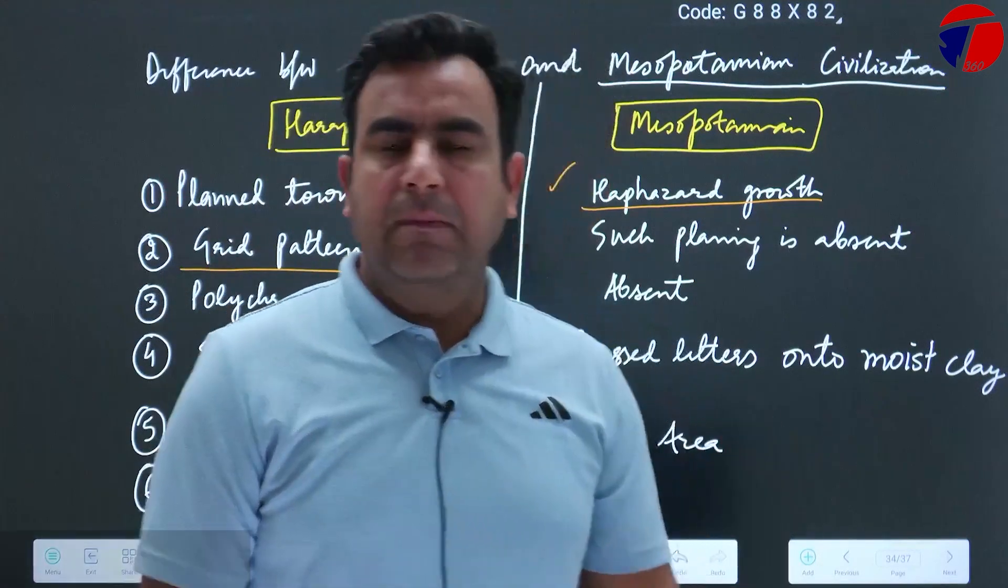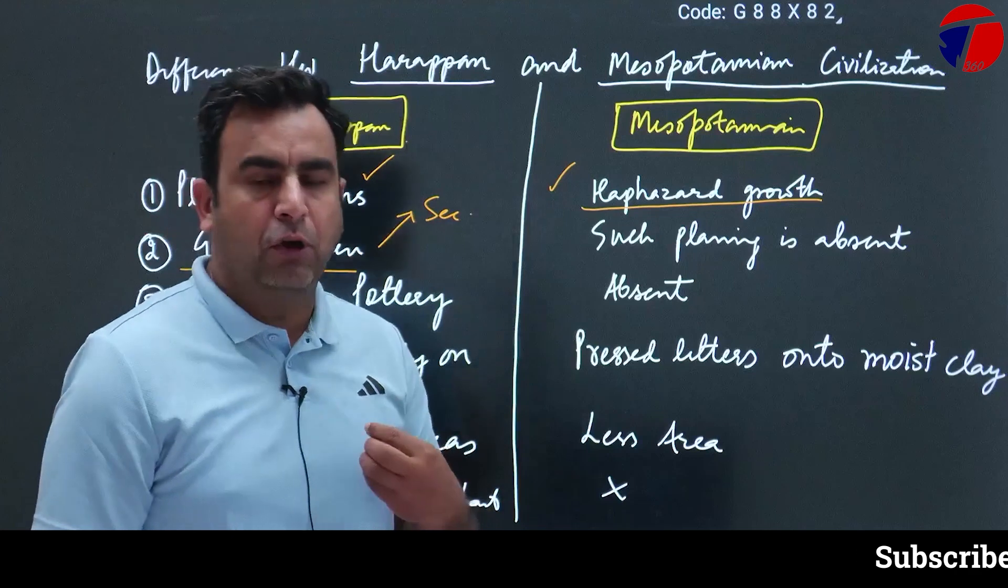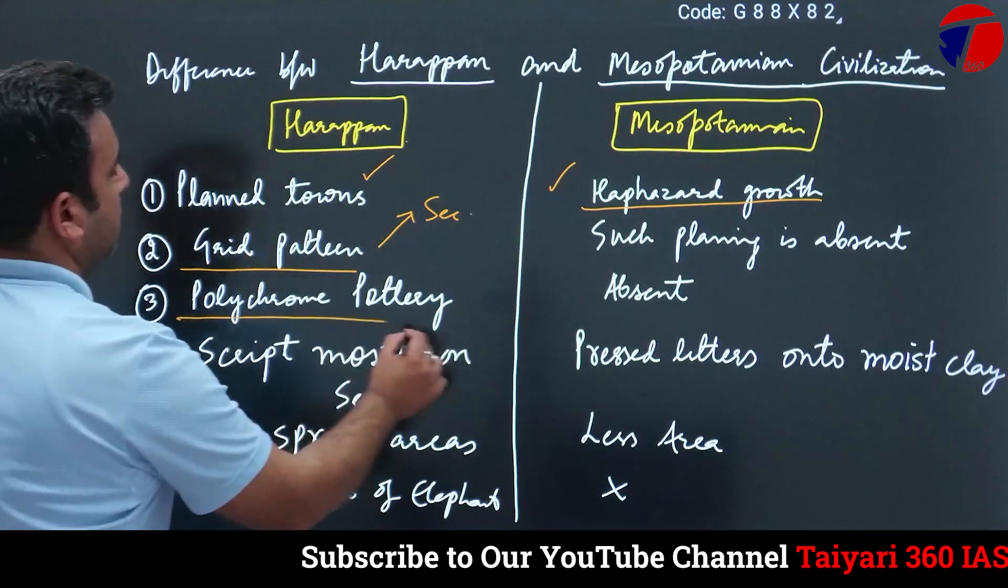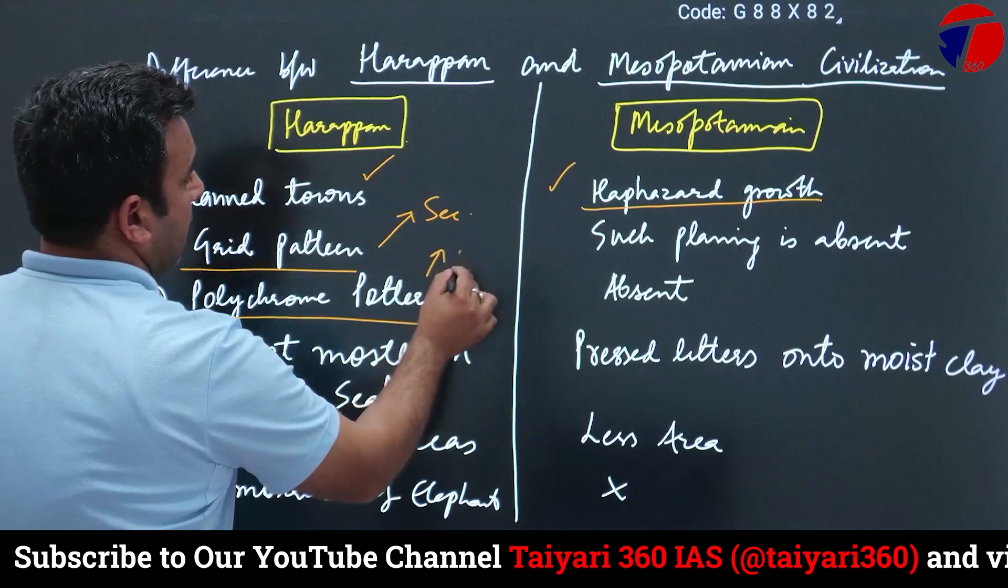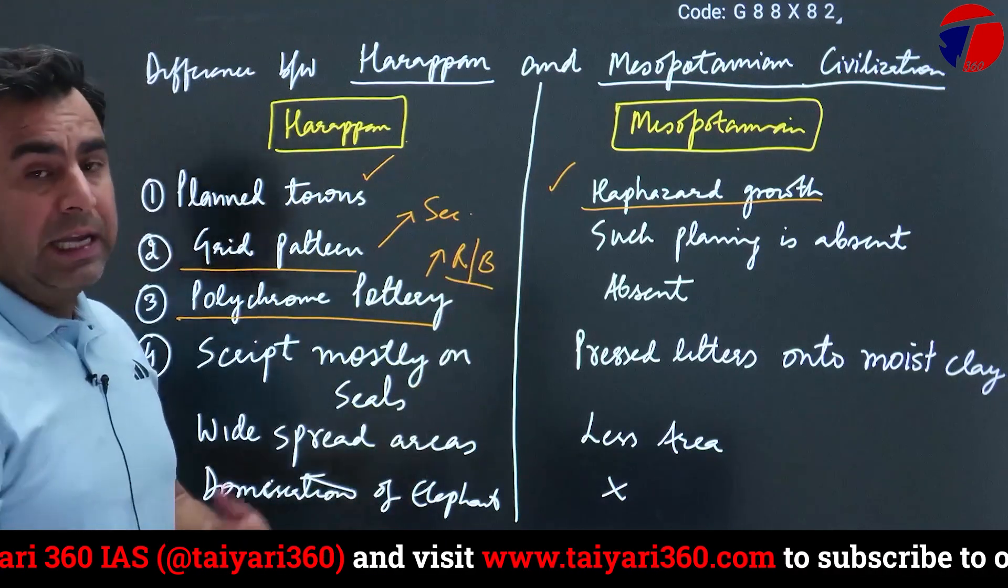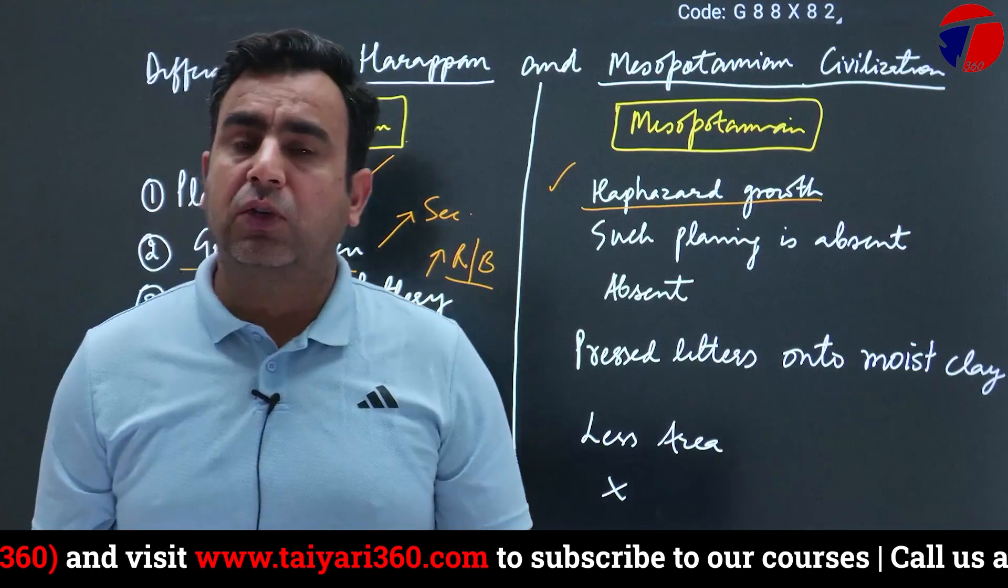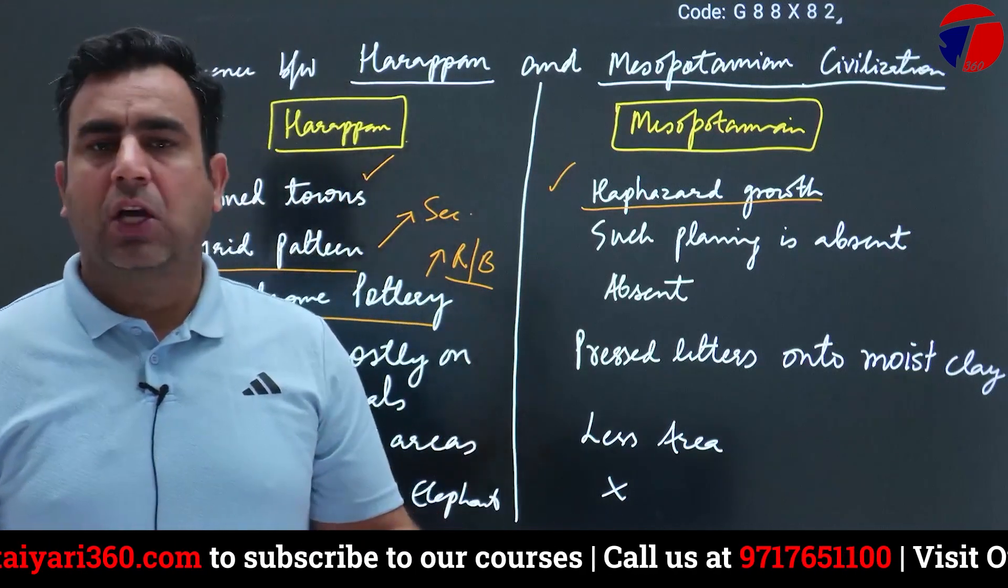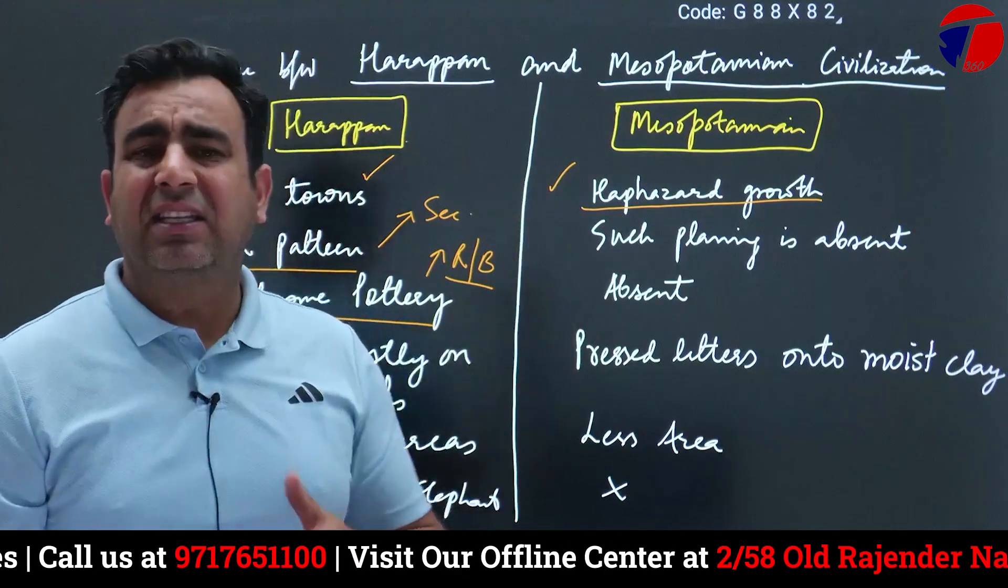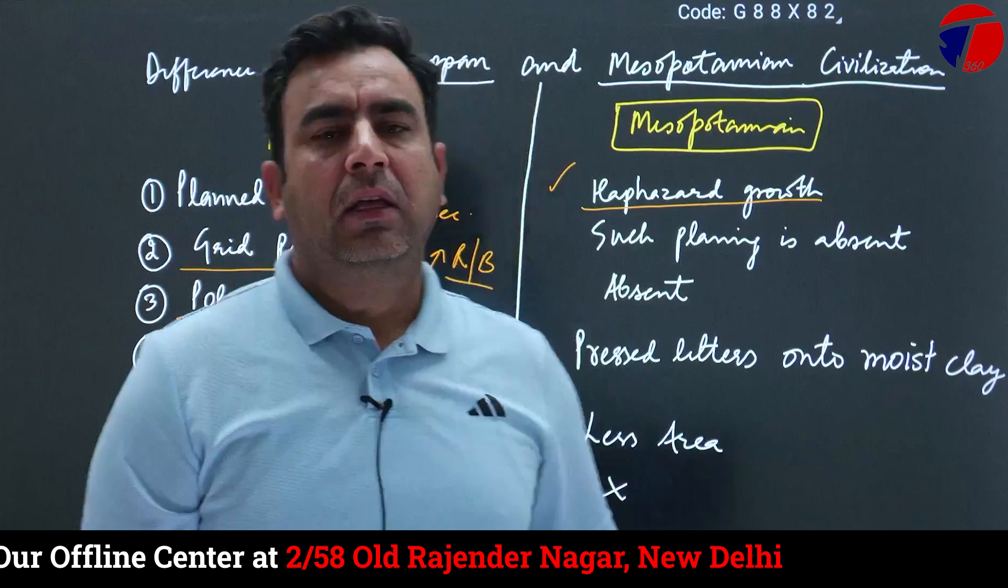If we talk about pottery, then polychrome pottery in Indus Valley - we discussed that is red and black type of pottery, decorated with utilitarian approach for common use. Again, such kind of detailed and polished pottery is absent in case of Mesopotamian civilization.